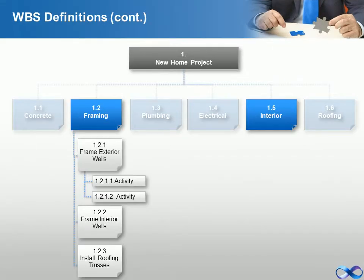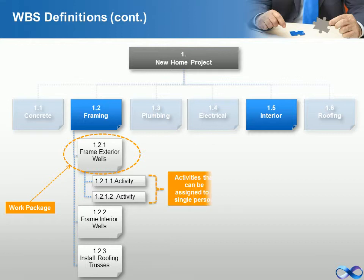The project team creates the project work breakdown structure by identifying the major functional deliverables and subdividing those deliverables into smaller systems and sub-deliverables. These sub-deliverables are further decomposed until a single person can be assigned. These levels are referred to as work packages, which are the lowest level of any branch of the work breakdown structure. The work package is a defined section of project work that produces a deliverable, either a part of the product or something required for the management of the project such as a risk management plan. The work package is normally the point of integration for schedule, cost, quality, and risk information.